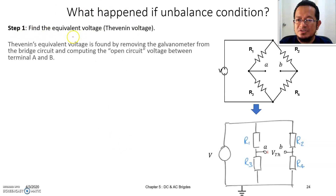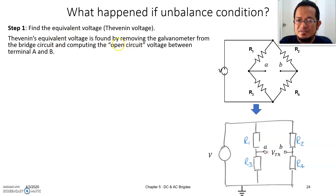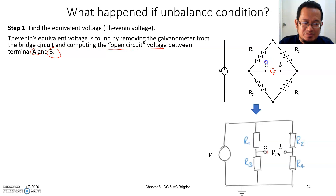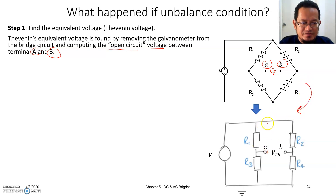Step one: how to find the equivalent voltage. The Thevenin's equivalent voltage is found by removing the galvanometer from the bridge circuit and computing the open circuit voltage between terminal A and B — the terminal where the galvanometer used to be. If I draw the Wheatstone bridge again with straightened lines, I get R1, R2, R3, R4, and the voltage between A and B is the Thevenin's voltage.